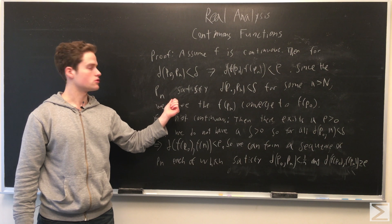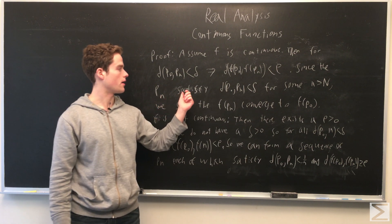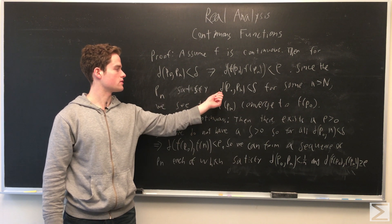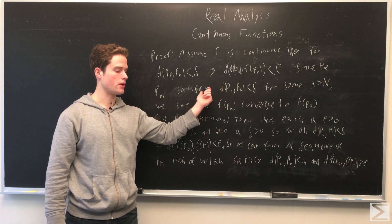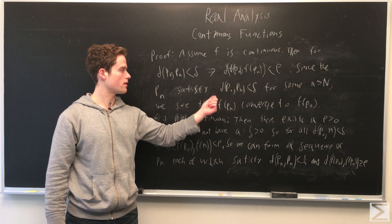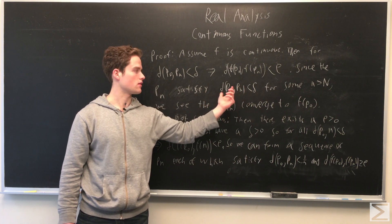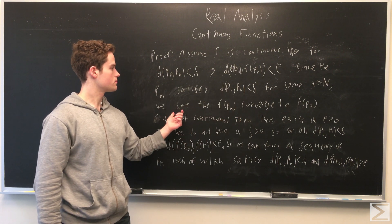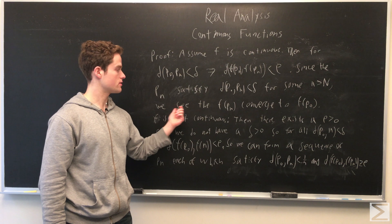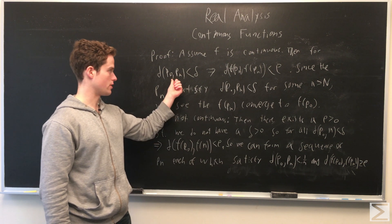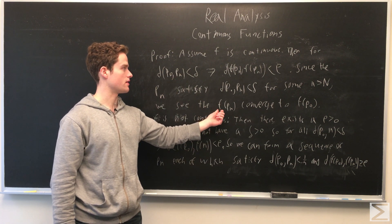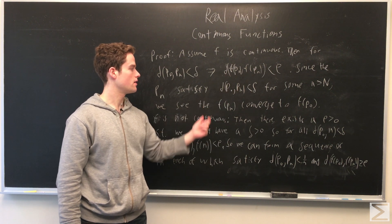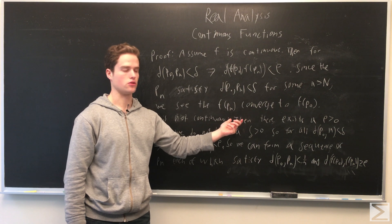Since P_N converges to P0, we can find some big N such that for any n greater than big N, the distance between P0 and P_N will be less than delta, with delta taken as small as we want. Since F is continuous and P0 is getting as close as we want to P_N, we see that F of P_N will become arbitrarily close to F of P0, and so F of P_N does in fact converge to F of P0.